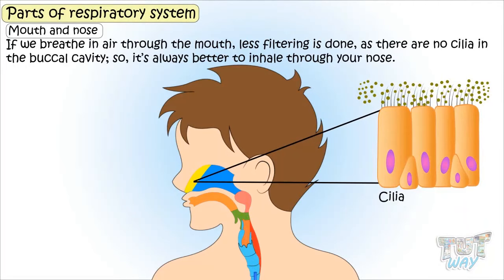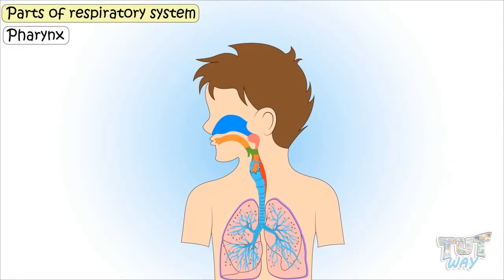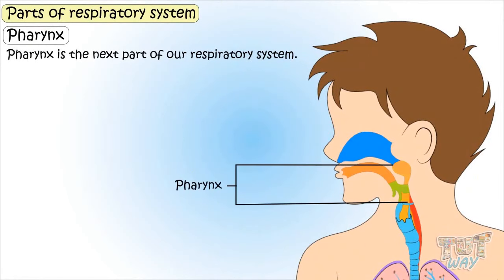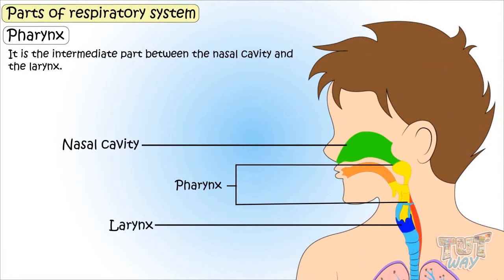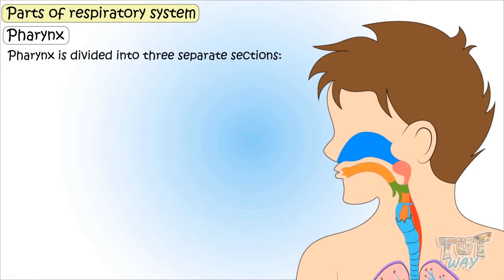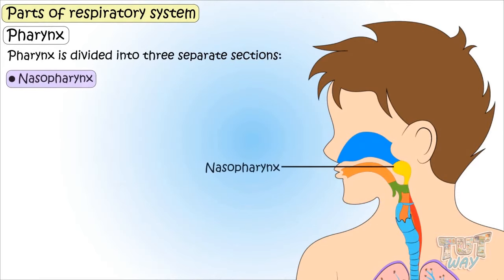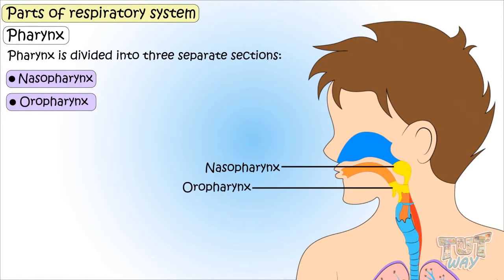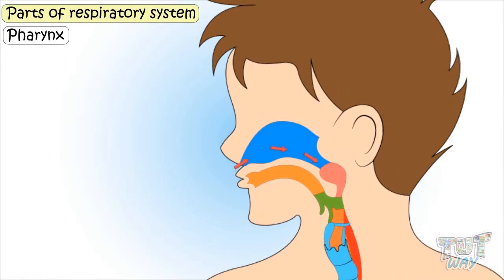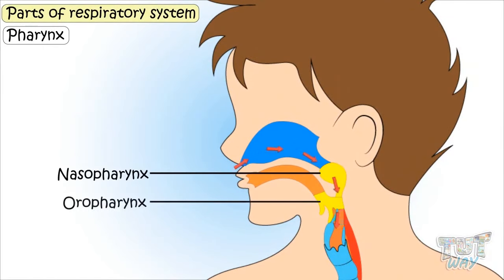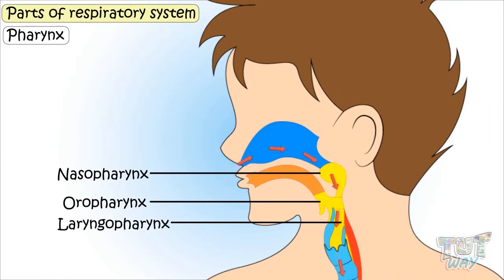The next part we will learn is the pharynx, or simply the throat. Pharynx is the intermediate part between the nasal cavity and the larynx. It is divided into three separate sections: nasal pharynx, oral pharynx, and laryngopharynx. Air travels through the nasal pharynx and oral pharynx and reaches the laryngopharynx.